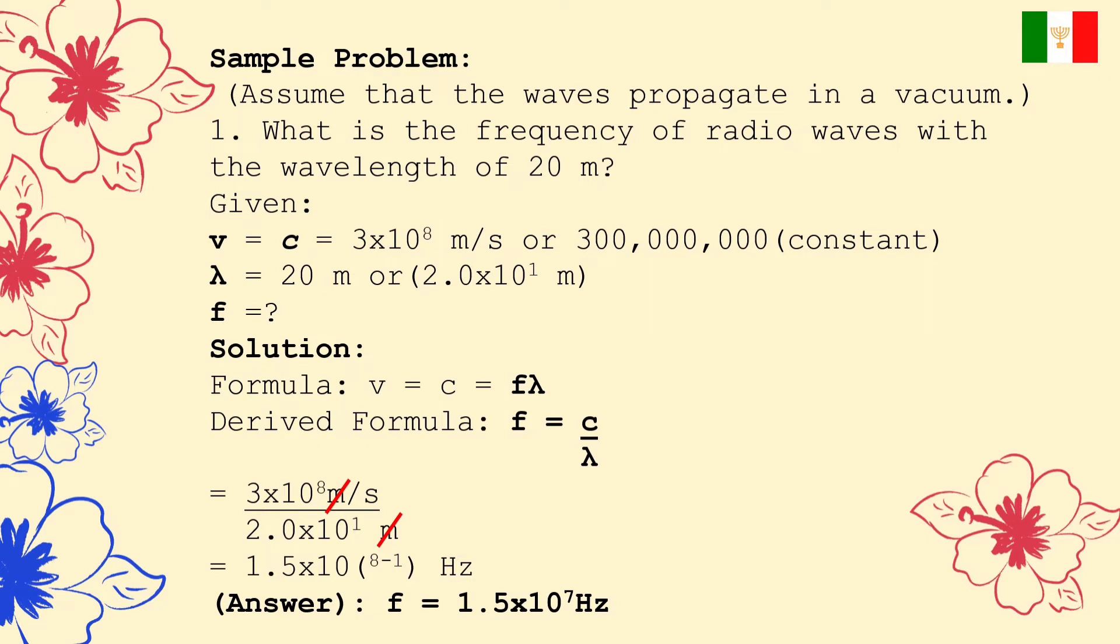The formula that we have is V, or speed of the wave, is equal to frequency multiplied by lambda, or wavelength. But we have to derive the formula, because the unknown is frequency. So, the formula would be frequency is equal to the speed of the wave divided by the wavelength. In our solution, we have 3 times 10 raised to 8 meter per second, over 2.0 times 10 raised to 1 meter. Let's do the cancellation of units, and that is meter. And our unit would be 1 per second, or hertz. So, the final answer would be 1.5 times 10 raised to 7 hertz.